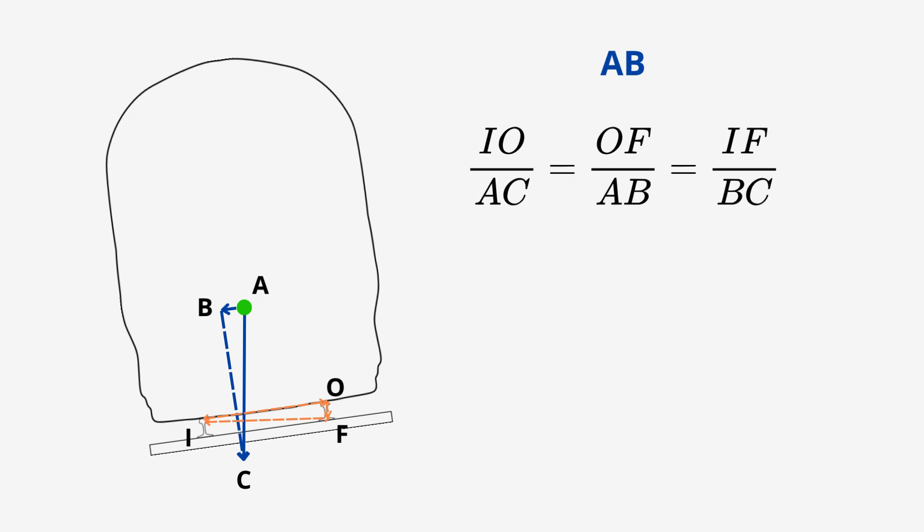Remember when we said we knew some of these forces? Let's put them in. IO is the distance between our rail centres, S. AC is MG, which is our mass times gravity. OF is our applied cant, EA. So, that's half our equations subbed in. AB is what we're looking for. Let's call this LI for lateral inward force.